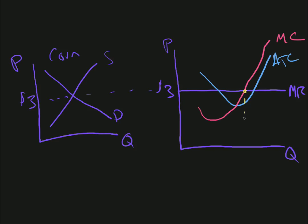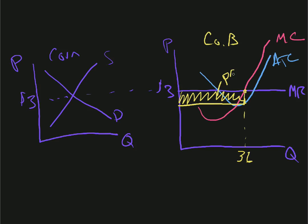That gives us the quantity — let's say that's 36 bushels of corn. The cost is down here at the average total cost, and the revenue is up here. So this particular rectangle equals the profits. We have positive profits here in the short run.